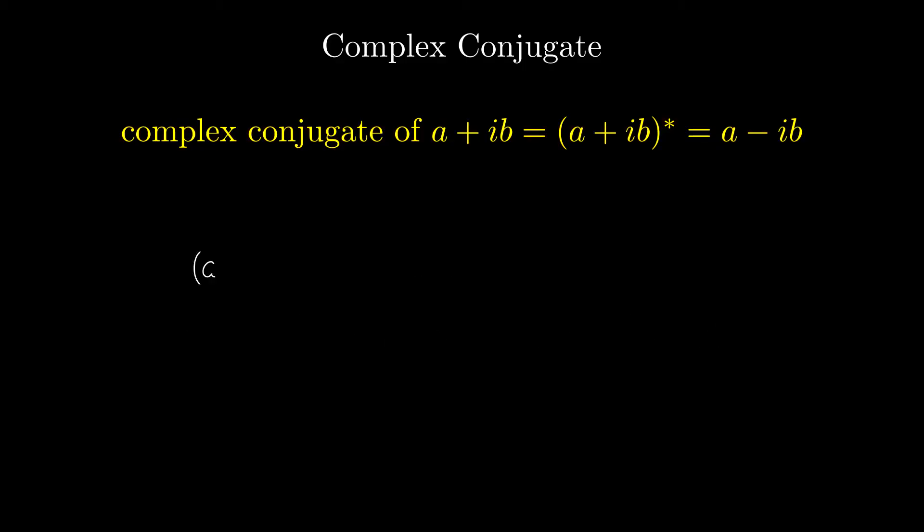One cool property of complex numbers is if we multiply any complex number by its complex conjugate, the result is always a real number. Try multiplying 2 plus 3i with 2 minus 3i and confirming this is the case.